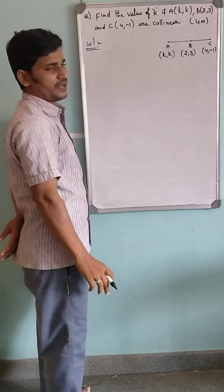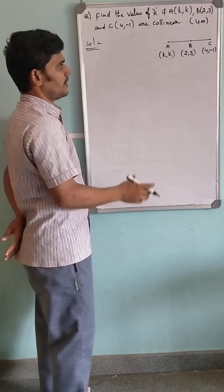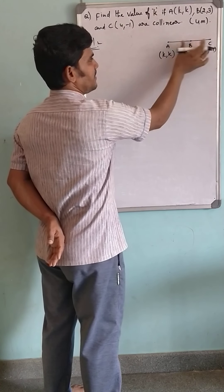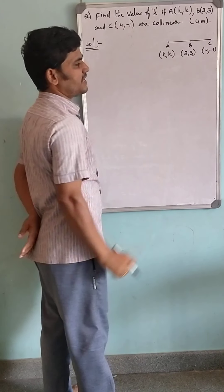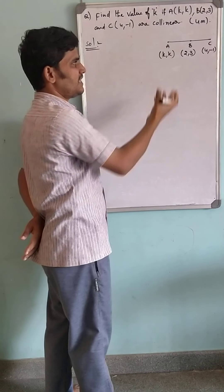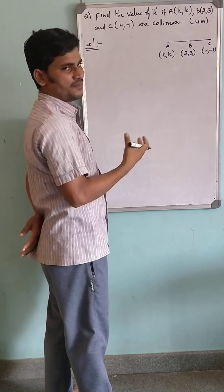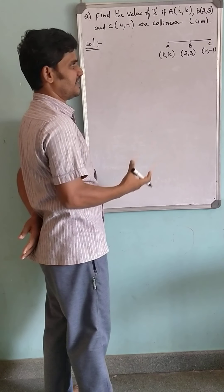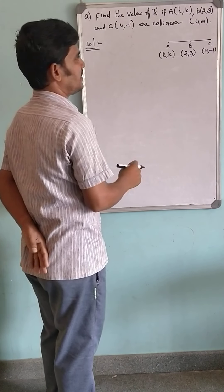They are lying on the same line. So if they lie on the same line, can you observe any triangle here? No triangle is possible, which means that the area of the triangle formed by them is 0 square units. So let us use that concept here.